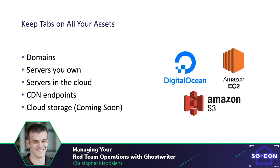Likewise, you can track servers — servers you own in a data center or off in the cloud. On a per-project basis, you can add things like your DigitalOcean droplets, Amazon EC2 instances, Azure computers. All of that can be tracked within Ghostwriter so everyone on the team knows who's using it, and if a client asks about an IP address, you can see what project it was part of and who to contact. We've also been expanding support for cloud storage like S3 buckets — things you want to make sure you're cleaning up at the end of an assessment.